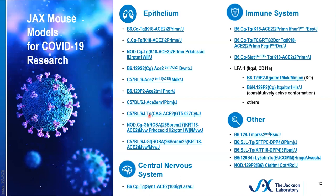I'd also like to mention the CAG strain. The CAG or chicken beta-actin promoter is highly active in a variety of tissues, so this strain might be useful for studying severe COVID-19 infection and sex-biased phenotypes. We also have a strain that would be useful for investigating pathology in the central nervous system, with ACE2 inserted under the control of the synapsin-1 promoter, which is active in the central nervous system.